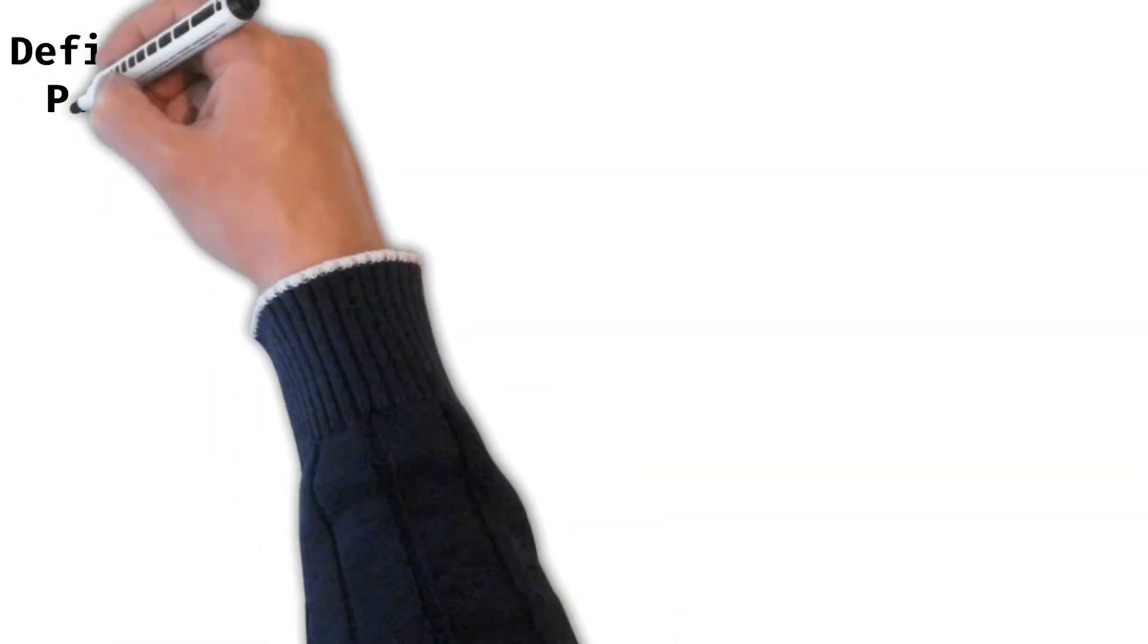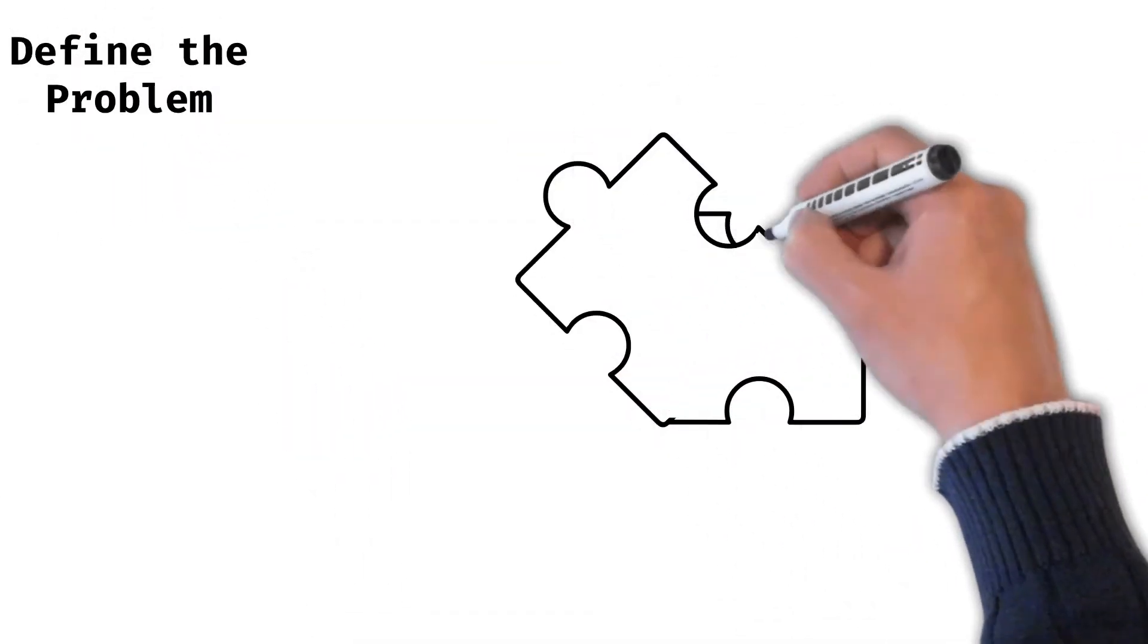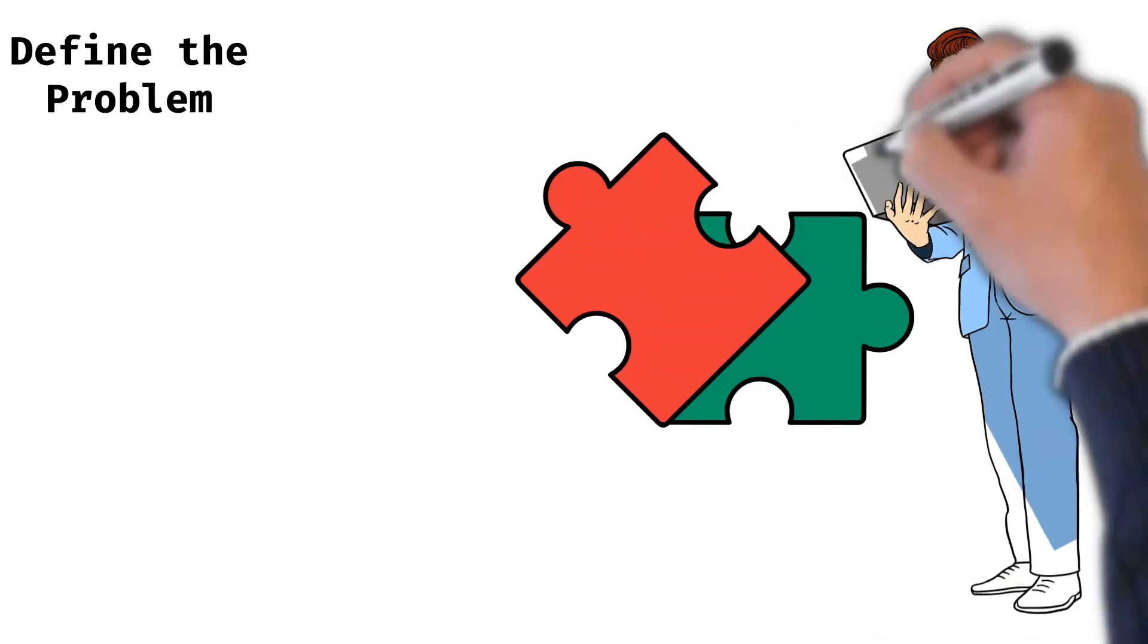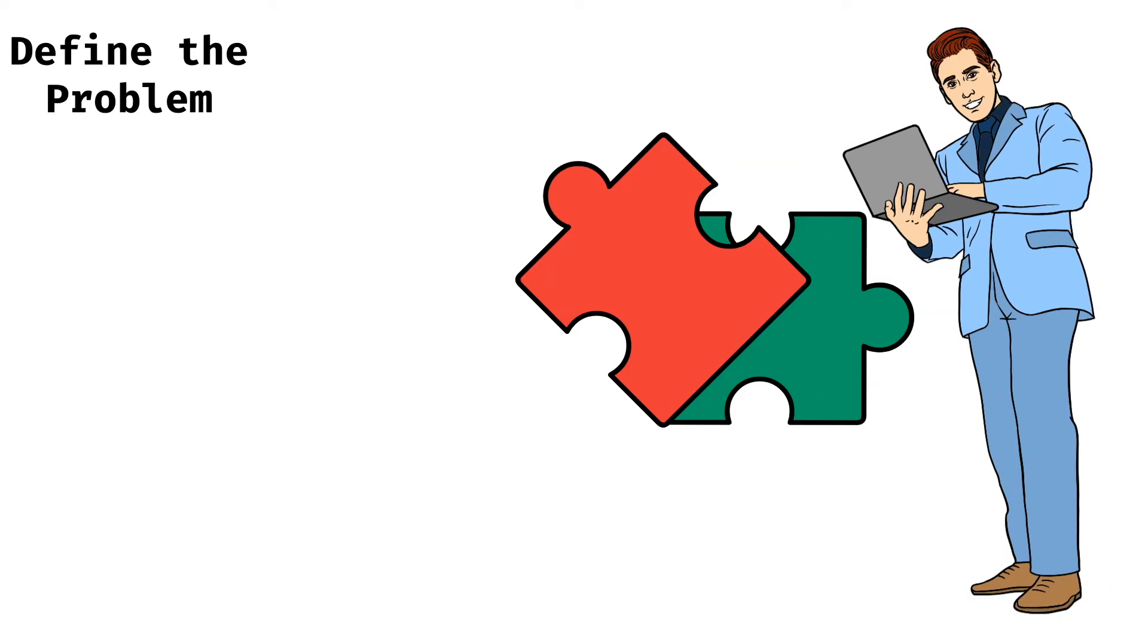The first step in creating any model is to be able to define the problem. We need to be very clear about what is the problem we want to solve. Only then we can proceed to create an appropriate model for that.